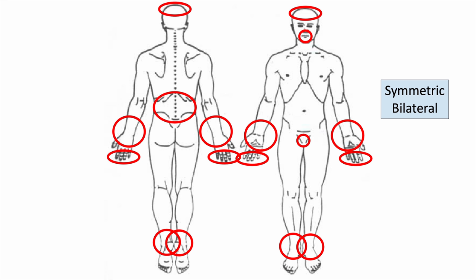So if you see it on one wrist, you'll see it on the other wrist. If you see it on one ankle, you'll see it on the other ankle. The condition is symmetric and bilateral, affecting these areas of the body.